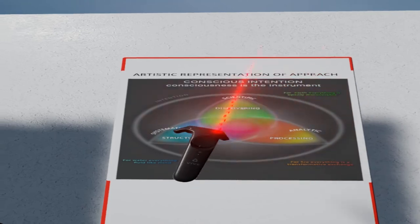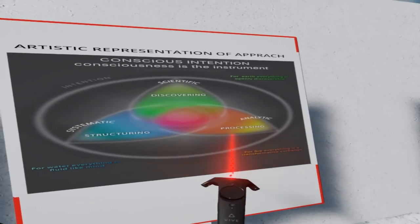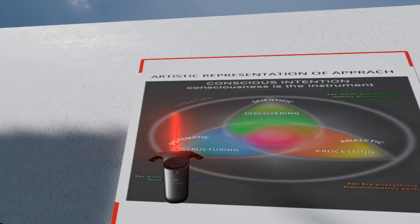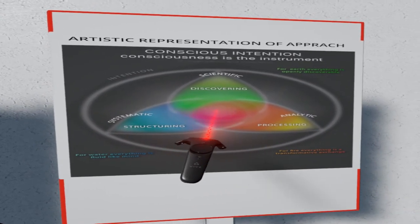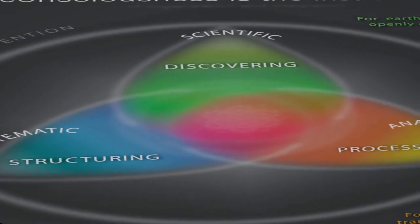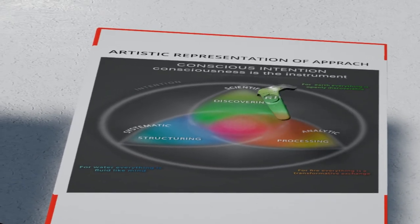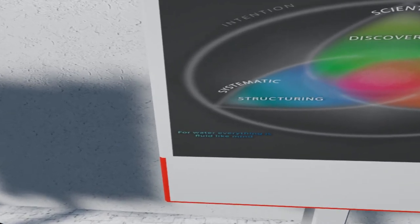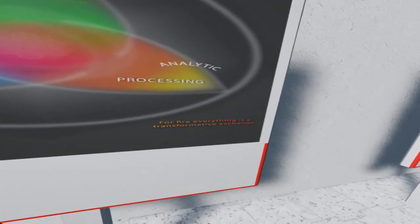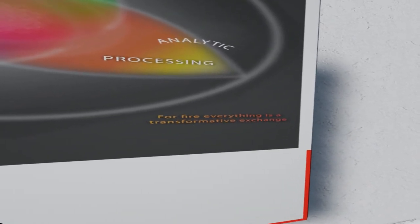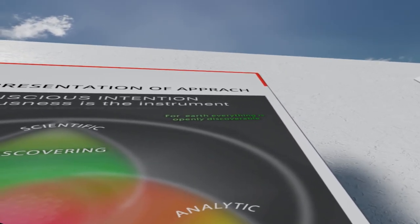Next, we have an artistic representation of the community's approach, which is composed of systematic structuring, analytical processing, and scientific discovery, all encompassed by this outer circle representing our intention. And then the inner geometry here, representing our integrations achieving some sort of greater alignment with the nature of our highest potential form of fulfillment. Each of the petals of this geometry are colored, and there is an aphorism for each. For the systematic nature of our approach, it says: 'For water, everything is fluid like mind.' For the analytic component, it says: 'For fire, everything is transformative exchange.' And for the scientific component, it says: 'For earth, everything is openly discoverable.'